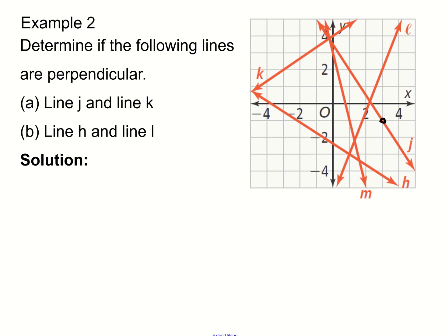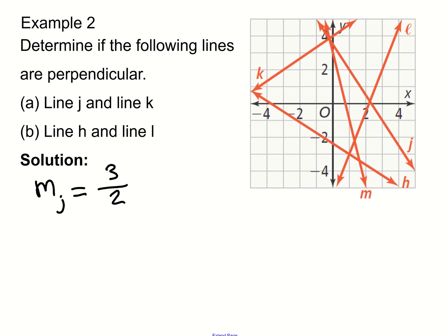For line J, we have a horizontal distance of 2 and a vertical distance of 3. So the slope of line J is change in y over change in x, which is 3 over 2. However, the line is actually going downward as you read the graph from left to right — it's going downhill — so the slope is negative. Therefore the slope of line J is negative 3 over 2.